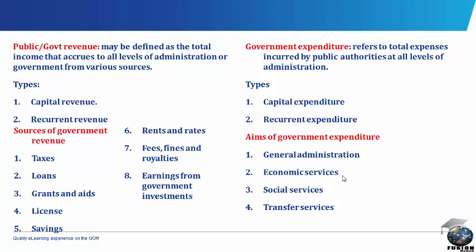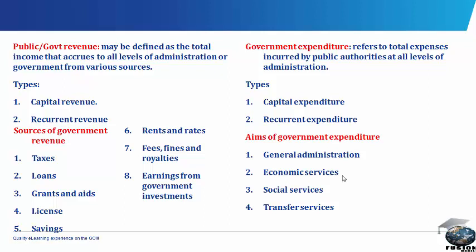Recurrent Expenditure. This is made up of all current expenditure on items that are meant to be used or consumed within a fiscal year, such as payments of workers' wages, repairs and maintenance, and other overhead costs. Recurrent expenditures are usually made for the day-to-day running of the government, and failure to meet up with such expenditures will amount to disruption in government economic and political activities.